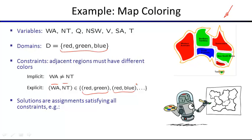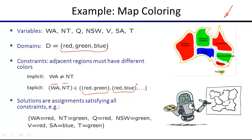The coloring shown on the slide is one example solution — there can be more than one. What's critical is that it doesn't matter in which order you color the map. What matters is finding a coloring that satisfies all the constraints. It's not so much a sequence of actions, but finding the set of color assignments that satisfies all constraints.